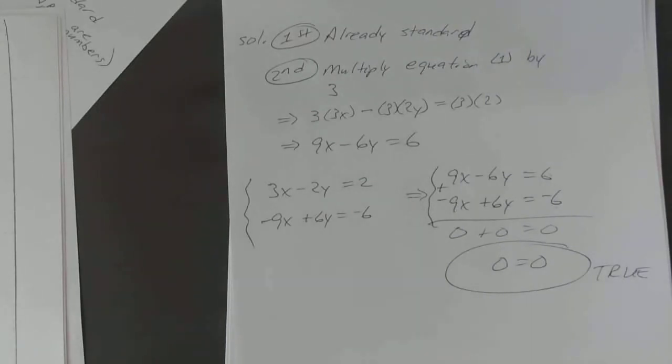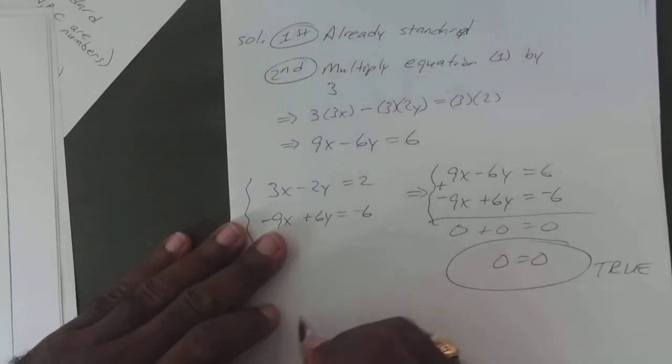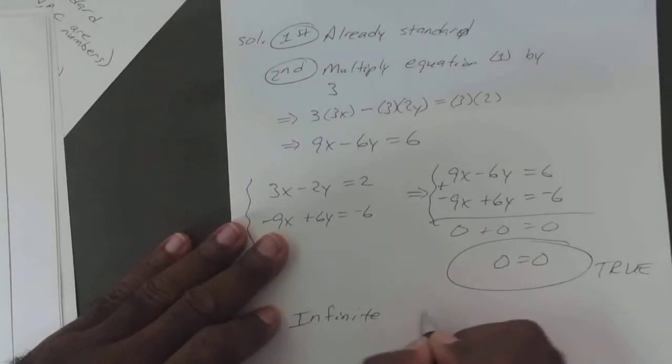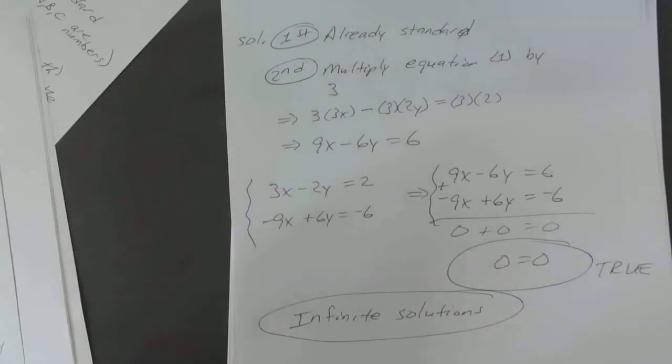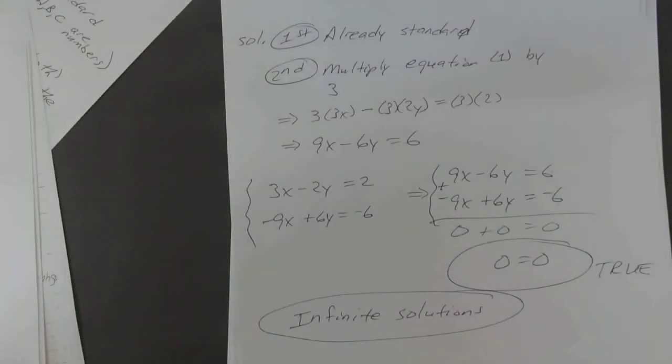Now when you end up with all the variables disappearing and you have a true statement at the end, there are infinite solutions. So that's the last example. Any questions on that one? Sorry about the little forgetting the minus sign. Those things happen every once in a while.